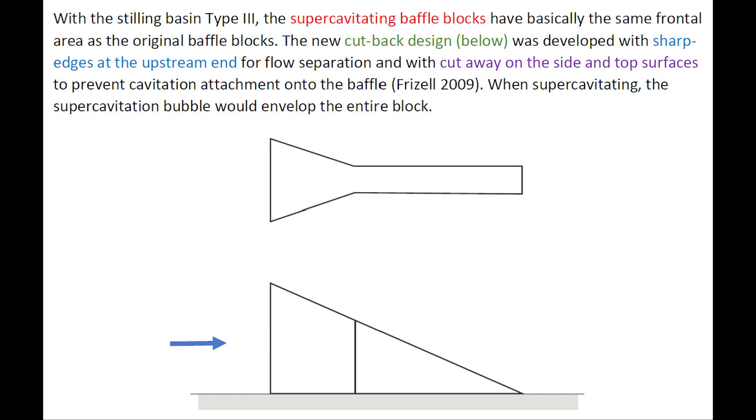With the Stilling Basin Type III, the supercavitating baffle blocks have basically the same frontal area as the original baffle blocks. The new cut-bar design was developed with sharp edges at the upstream end for flow separation, and with cutaways on the side and top surfaces to prevent cavitation attachment onto the baffle.